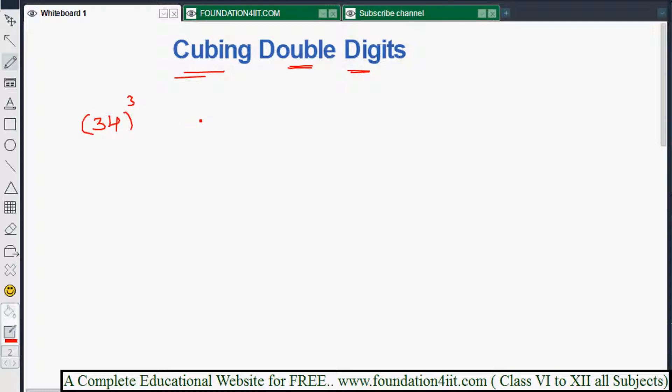Single digit cubes you need to memorize for faster calculations. Now when you see two digit cubings, generally x³ equals x multiplied three times. The same number I should multiply thrice.